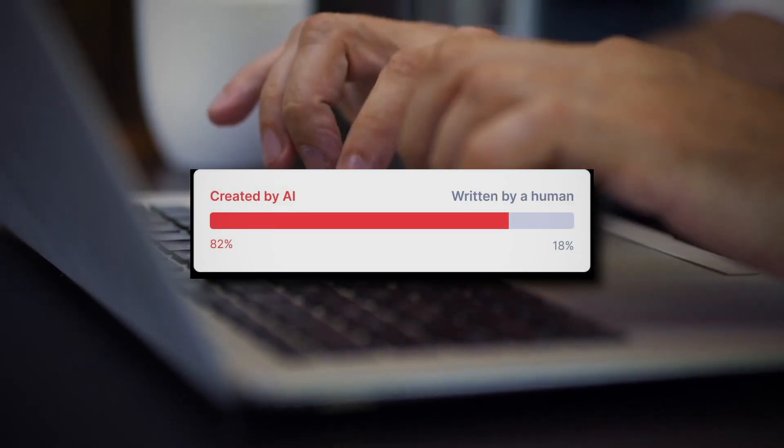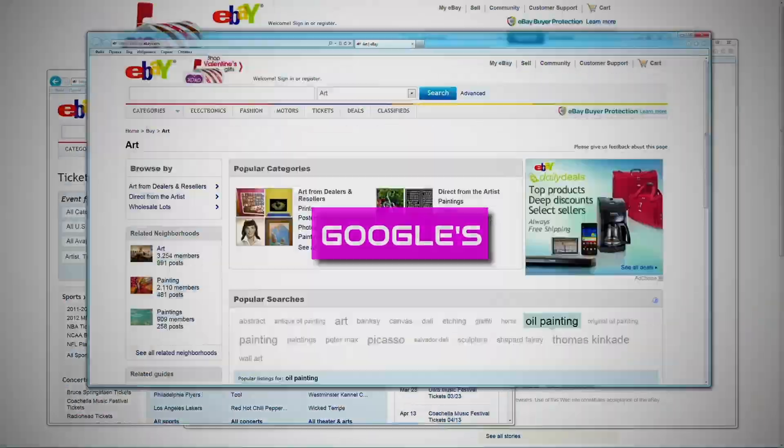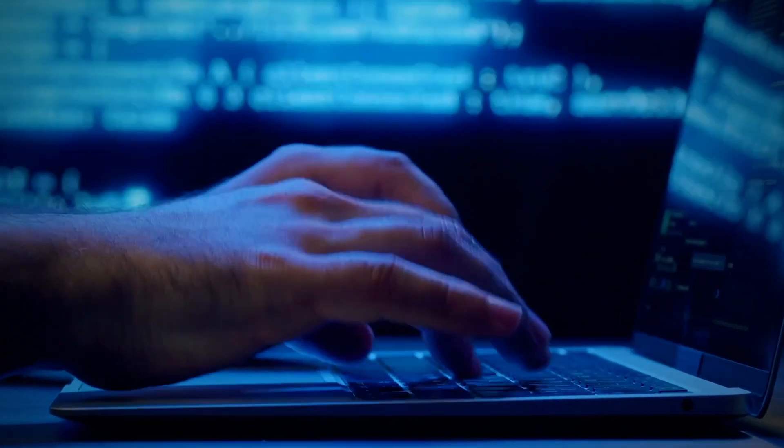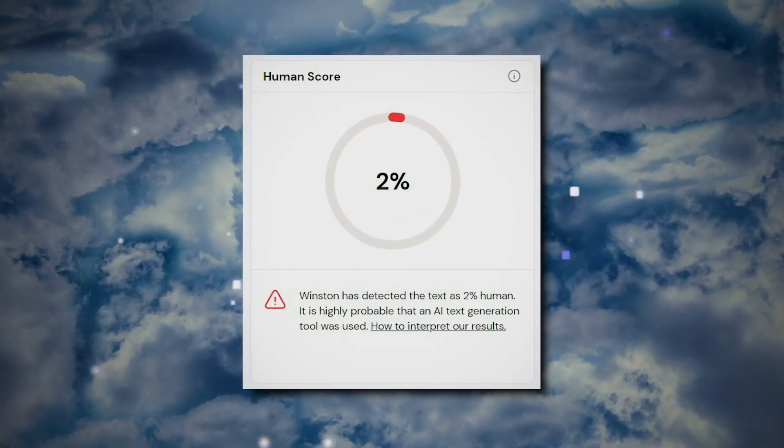First, AI detectors scan through piles of student essays, searching for suspicious resemblances to Google's vast library of knowledge. However, these aren't infallible. They might mistake a well-crafted sentence for a crime against originality.